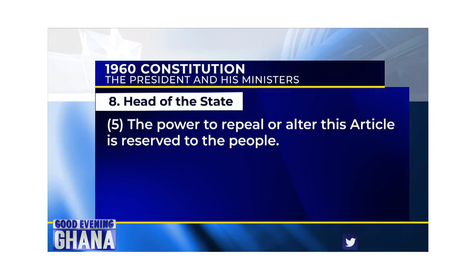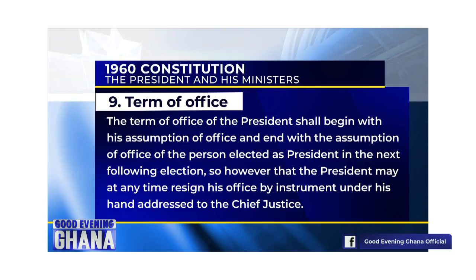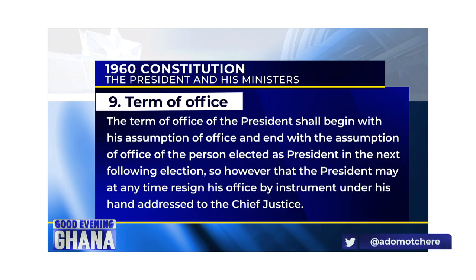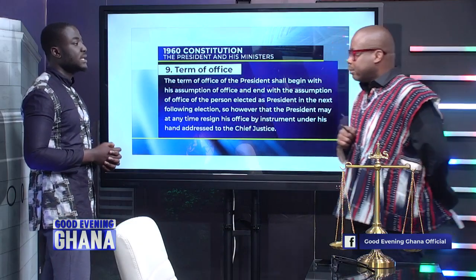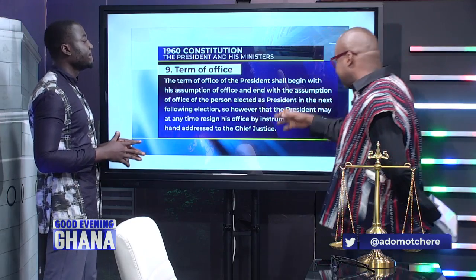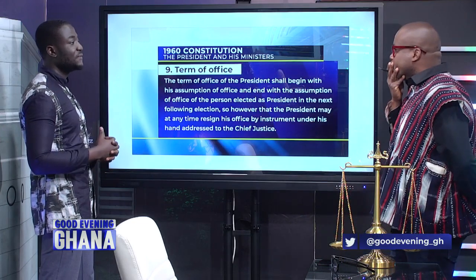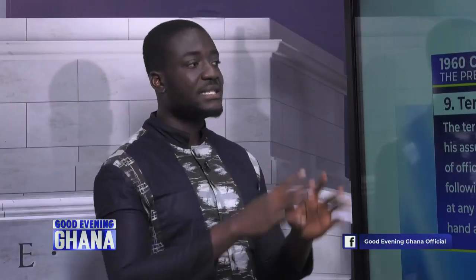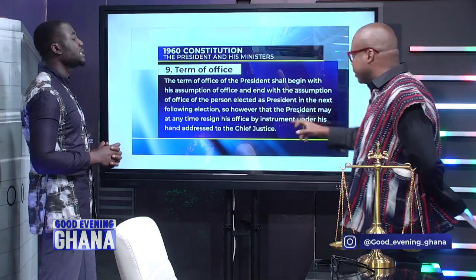Article 9 covers the term of office. This article meant that there was no clear presidential term — the term would last until the assumption of office by the person elected in the next following election. That next following election could have been 100 years away, with no determination of when it would occur. There was no fixed term as we have the four-year terms now.